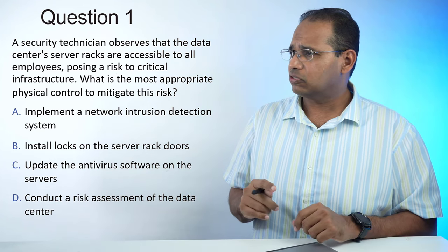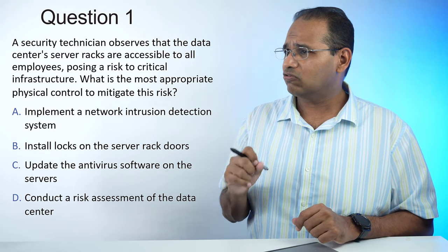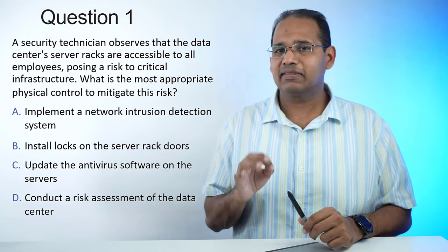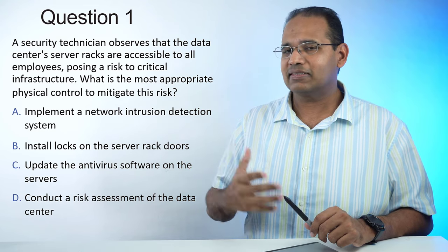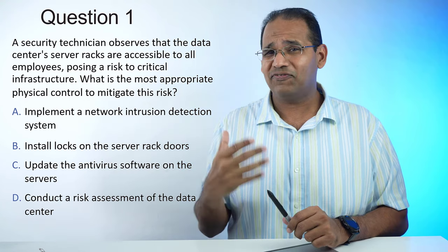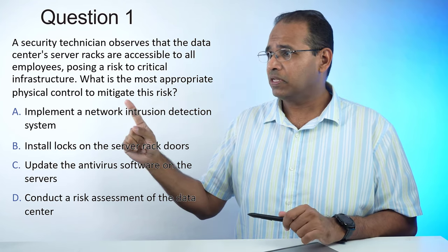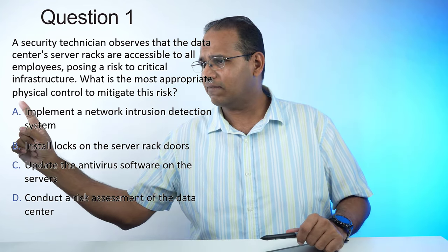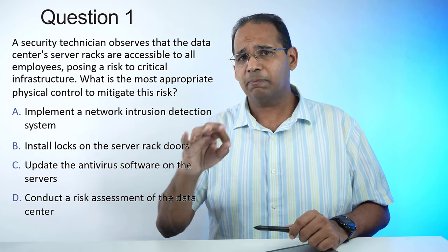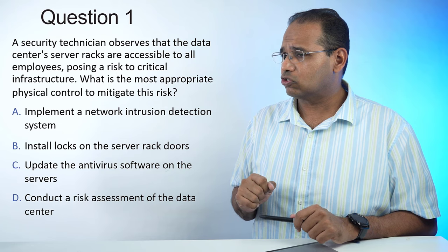Question 1: A security technician observes that the data center's racks are all accessible to all employees, posing a risk to critical infrastructure. What is the most appropriate physical control to mitigate this risk? The answer is B — install locks on the server rack. Notice it says physical control. Network intrusion detection system is a technical control — hardware and software. Antivirus is also a technical control.